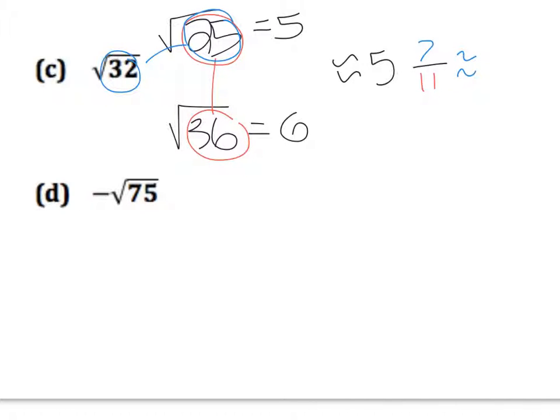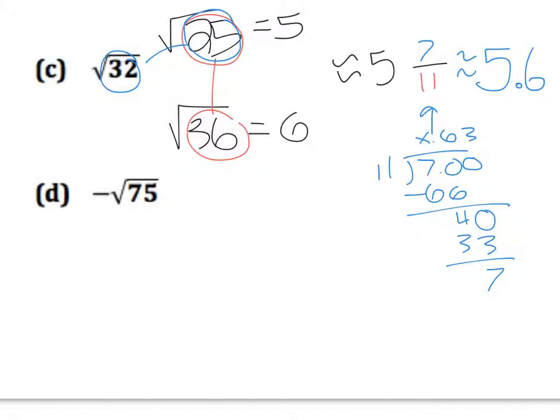In order to figure out what 7 elevenths is as a decimal, you need to divide it. So do 7 divided by 11. Take it out to two decimal places so that you can then round this according to the tenths. 11 does not fit in 7, but 11 does fit in 70. It would be 6 times. 6 times 11 is 66. Subtract that, you get 4. 11 goes into 40 three times. 3 times 11 is 33. Remainder of 7. We're going to stop it there. We're just rounding to the nearest tenths, and 0.63 will allow me to do that. So this is going to be about 5 and 6 tenths when you round it.